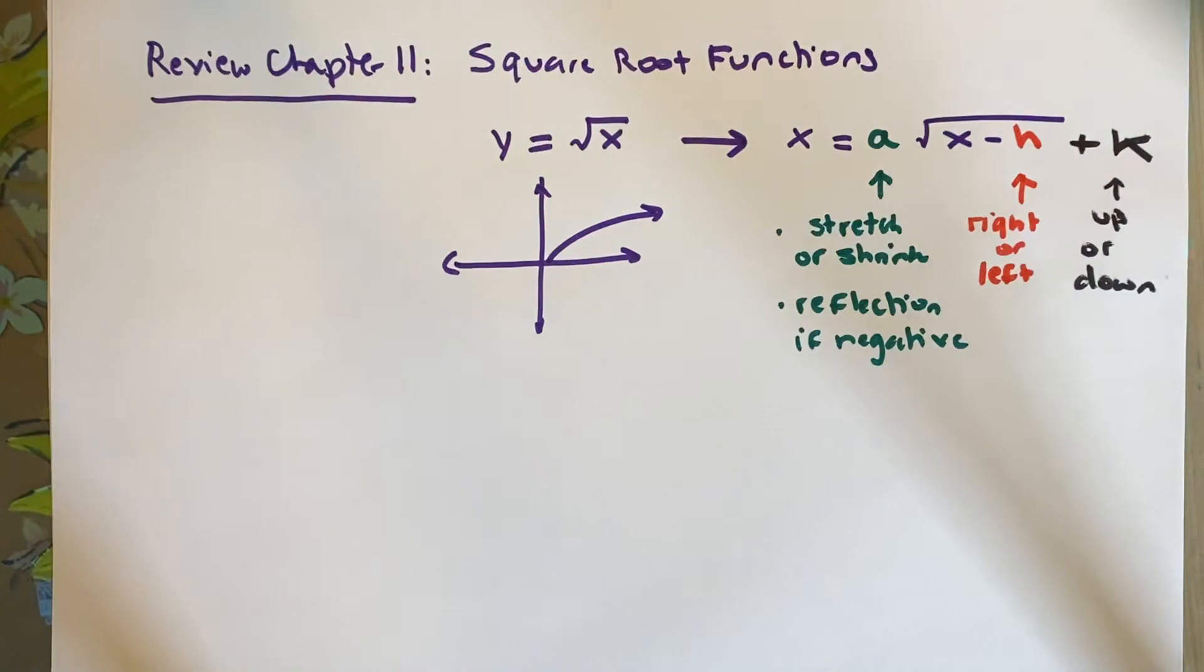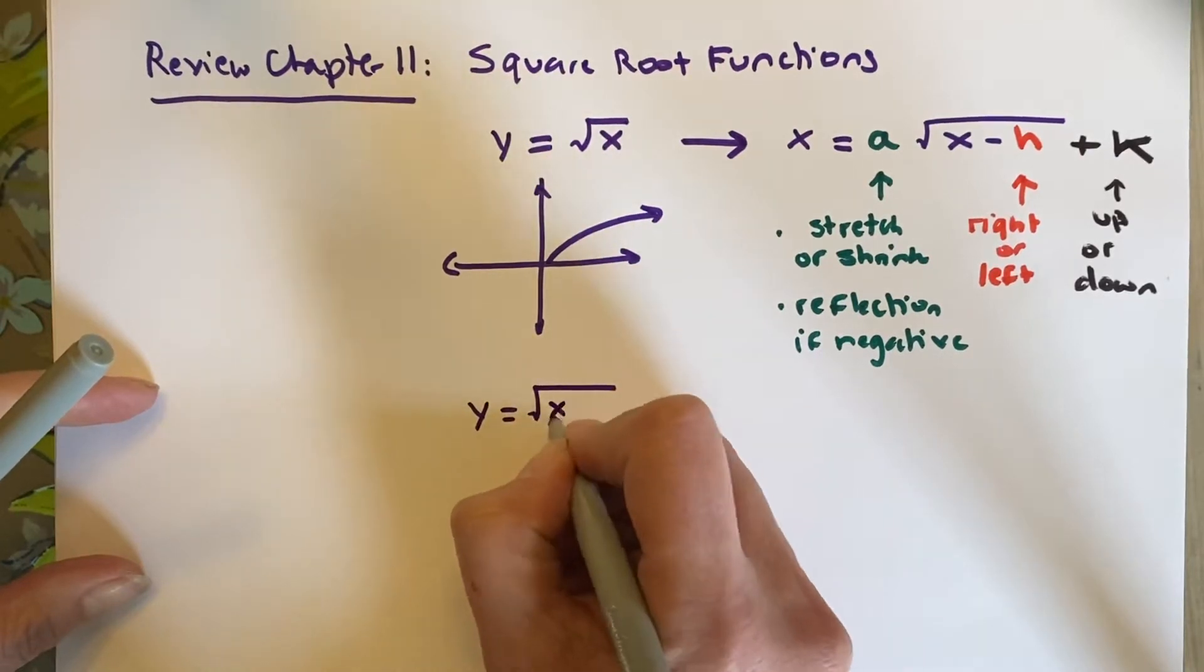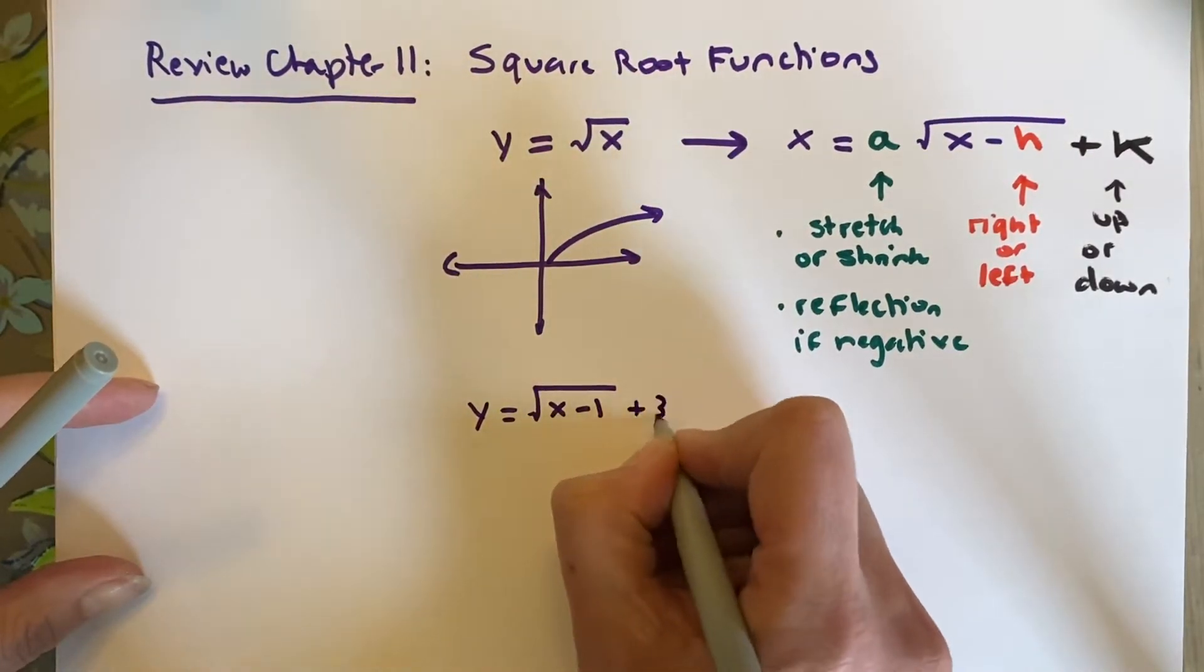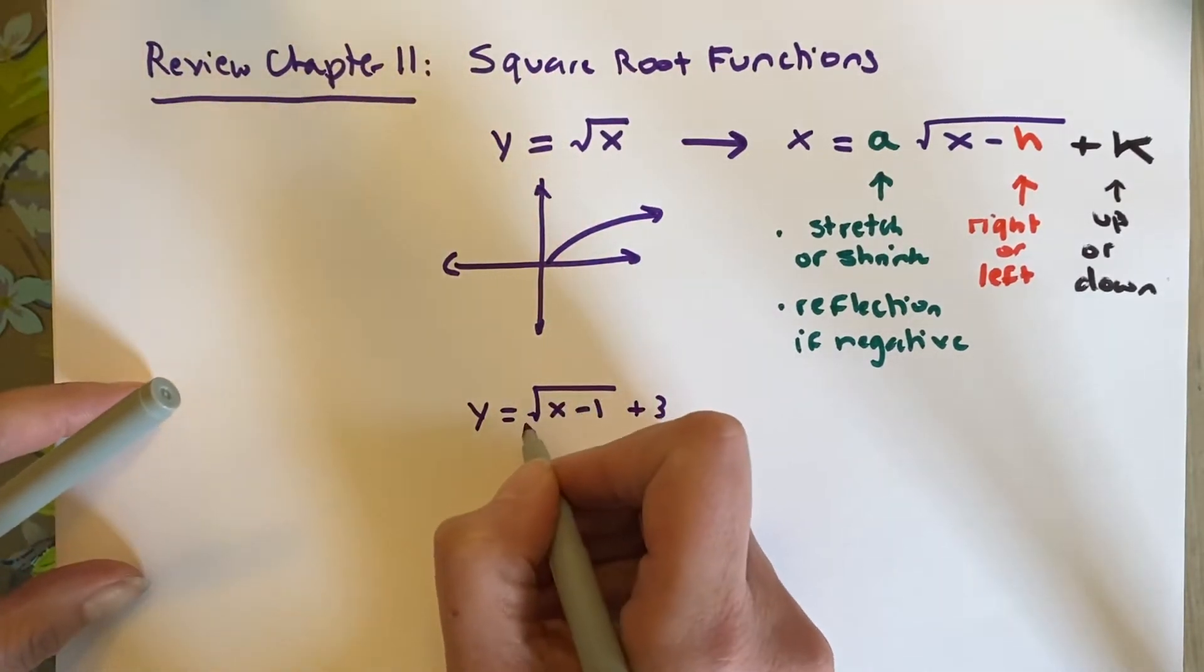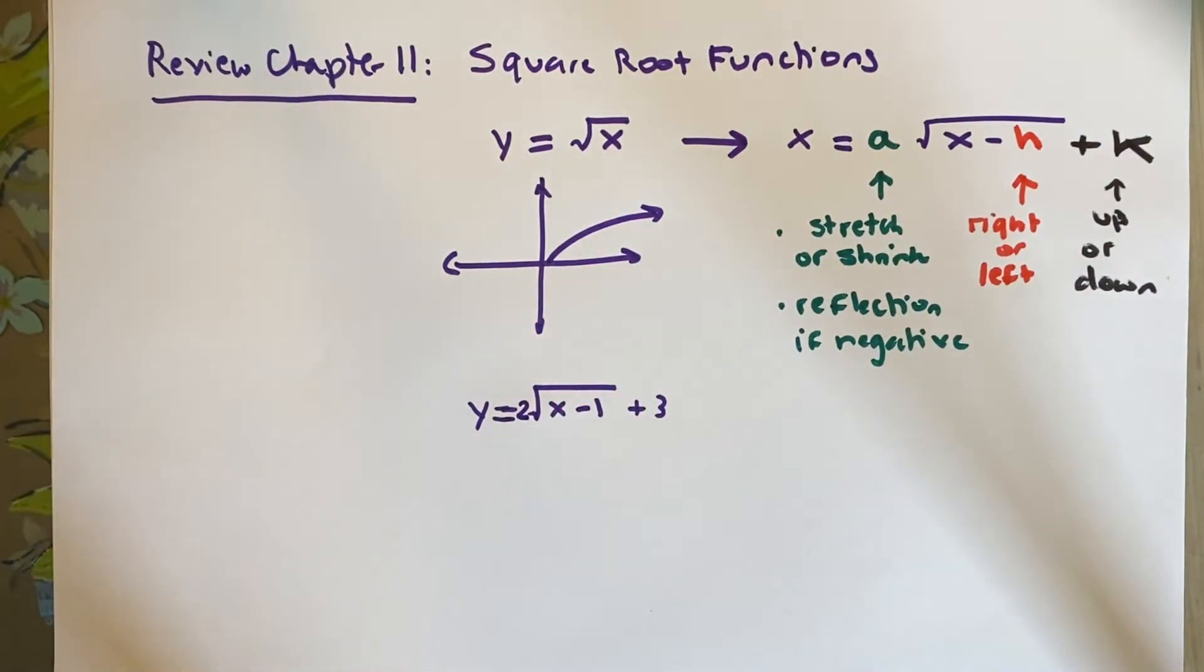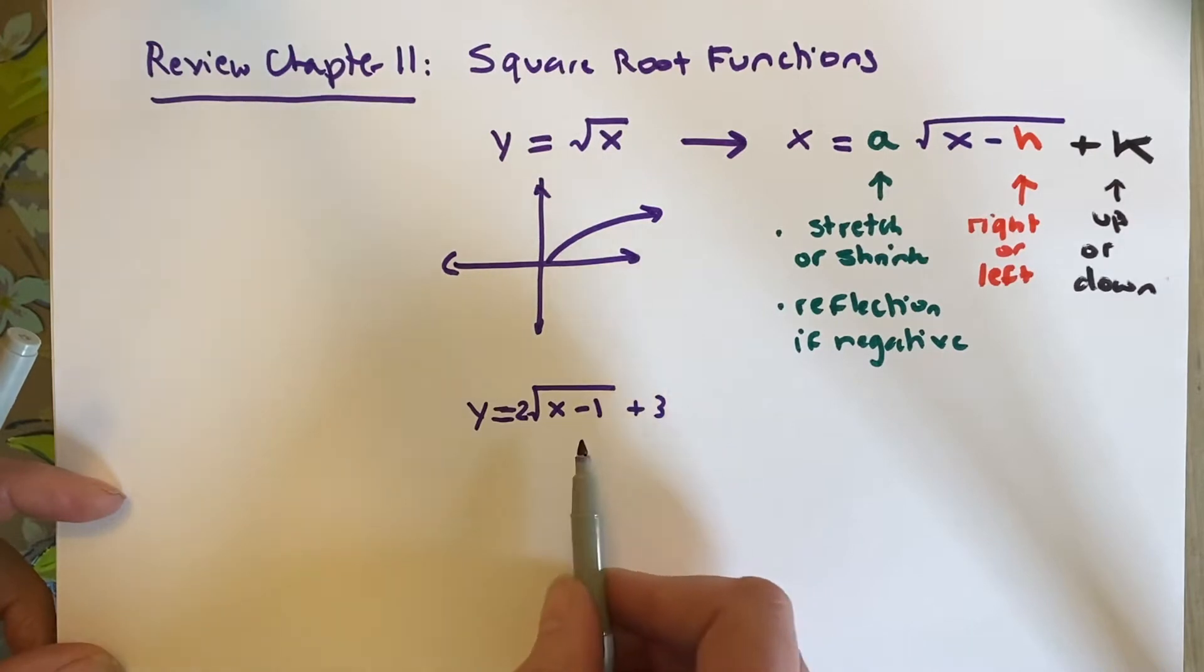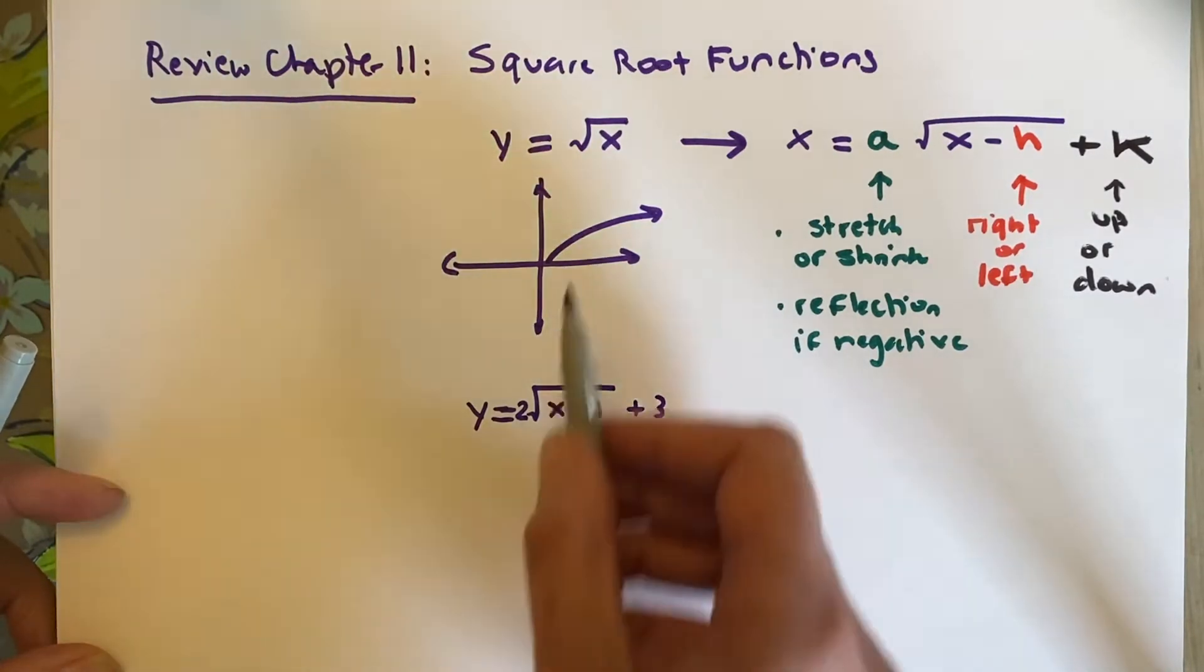I'm going to use y equals the square root of x minus 1 plus 3. Maybe I am going to put an a in front just to make it real, so you can see the whole package. Knowing this, the 3 is going to move it up and down and tell me my y-intercept. This function is going to start at 3. The 1 here is going to tell me side to side, so this is going to start at x equals 1. And the 2 tells me this is a stretch, so it's going to be steeper.